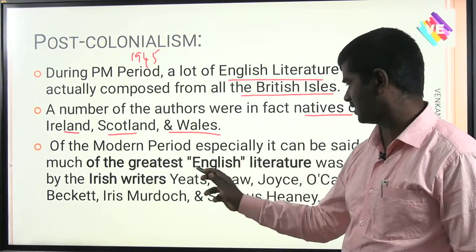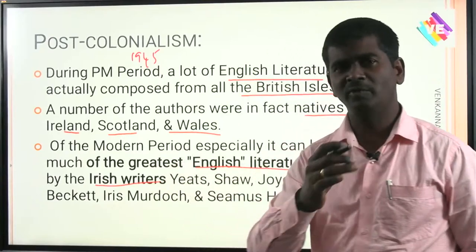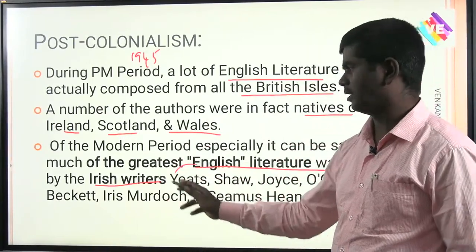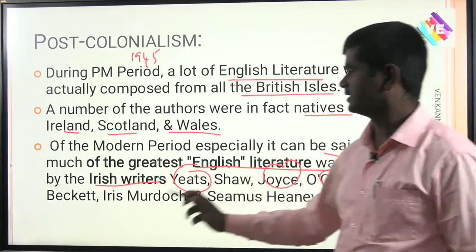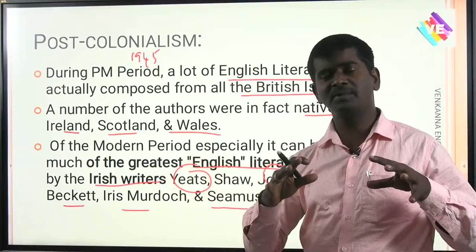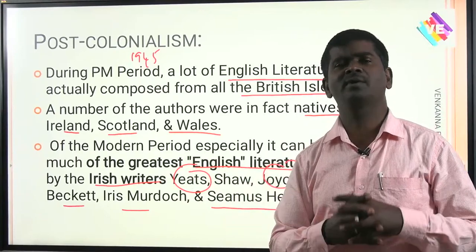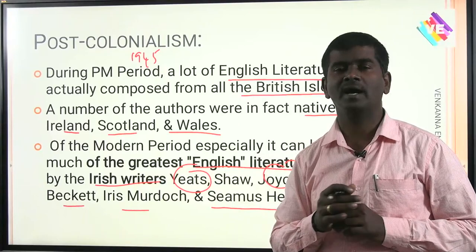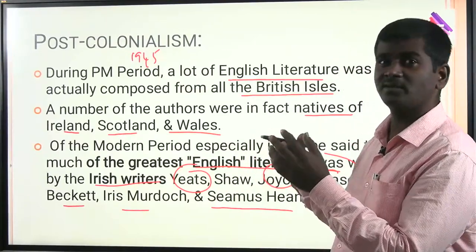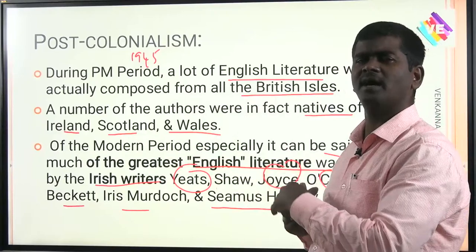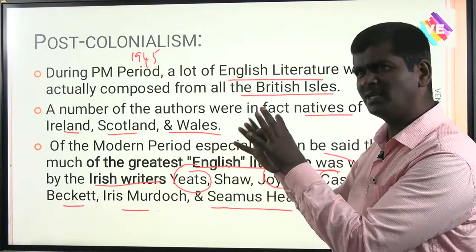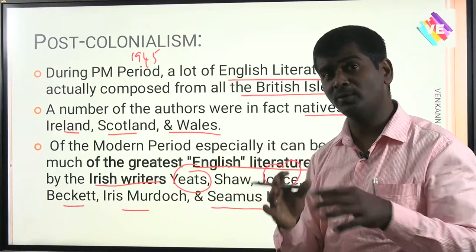A number of authors were in fact natives of Ireland, Scotland, Wales, the Caribbean, or Indians and Asians. Of the modern period, especially, it can be said that much of the greatest English literature was written by Irish writers — like Yeats, J.B. Shaw, James Joyce, Sean O'Casey, Samuel Beckett — many of them are Nobel laureates. So English literature was not just written by the English people; it was written by Irish people, Americans, Australians, and Indians. That literature written beyond the English is what we call post-colonial literature, and those writers are called post-colonial authors.